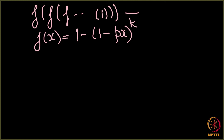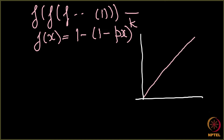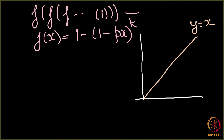We have looked at this function, so I will just roughly sketch it here. So, we have looked at this function — if these are our axes, this is our line y equals x. We saw that the first point of this function was here at the origin and the second point was something less than 1. And then we saw that the slope of this function at the origin is nothing but the basic reproductive number R0.